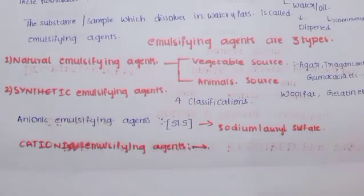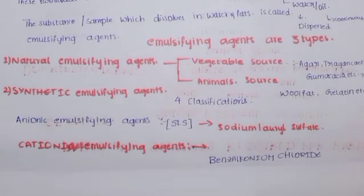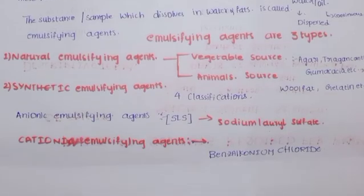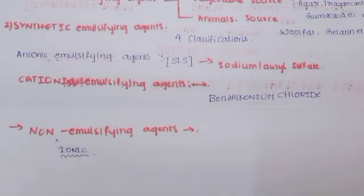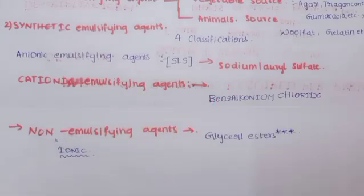The second classification is cationic emulsifying agents. Cationic means positively charged. The example for cationic emulsifying agents is benzalkonium chloride. The third classification is non-ionic emulsifying agents, which are not in ionic form and are entirely different from ionic agents. Non-ionic emulsifying agents are considered the most effective, and the example is glyceryl esters.